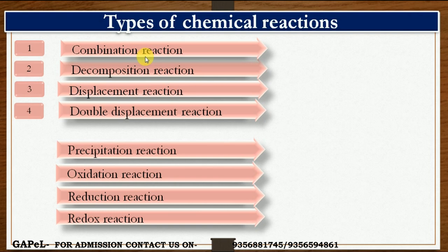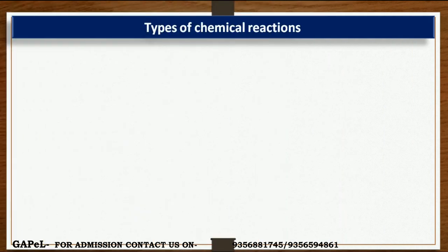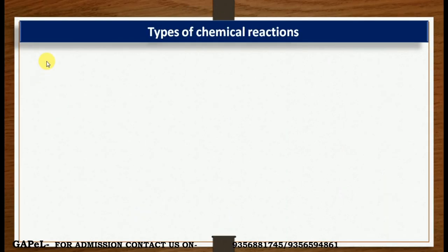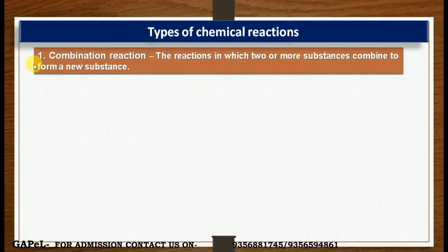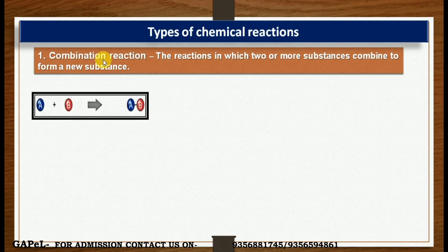The first type is combination reaction. A combination reaction is the reaction in which two or more substances combine to form a new substance. In general form, elements or compounds A and B combine to form a new substance AB.